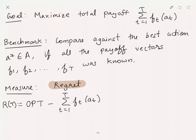The benchmark we compete against is the best action in hindsight: if the entire sequence of vectors F_1, F_2, ..., F_T was known a priori and we stuck with one action, what is the best total reward? Our measure of performance is called regret R(T), defined as the total payoff of the optimal algorithm (OPT) minus the total payoff your algorithm received.